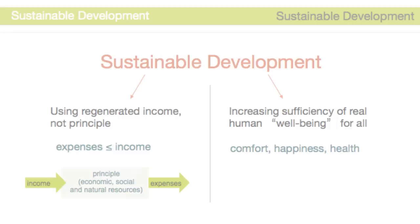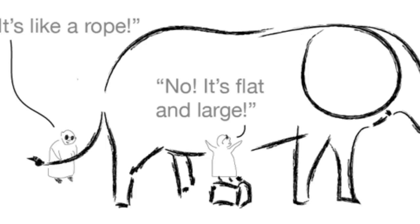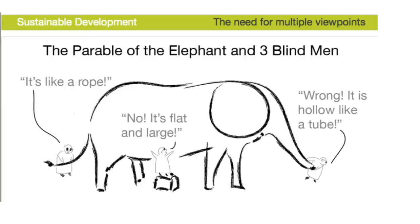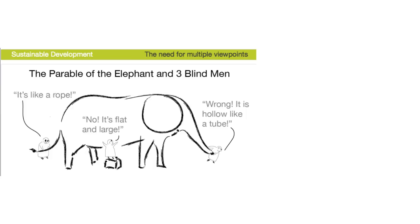Sustainable development brings to mind the parable of the elephant and the three blind men. As shown here, each man has a very limited ability to detect and discern the whole situation, yet to each man what they sense occurs to them as a very convincing and total reality. For sustainable development, multiple perspectives are required. Current best practices call for participatory designs which engage all stakeholders in the process of design, giving equal voice to all.